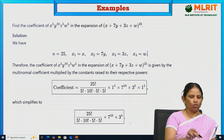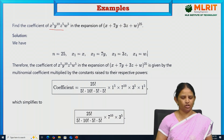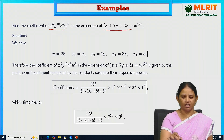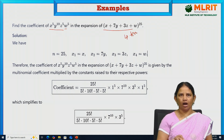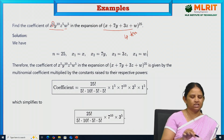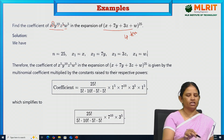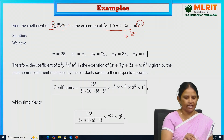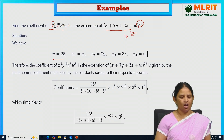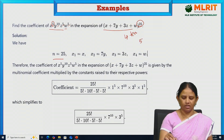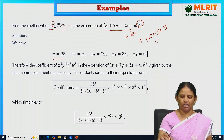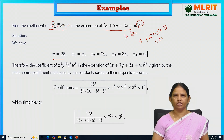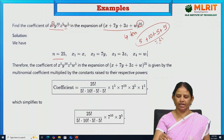Consider the first example: find the coefficient of x⁵ · y¹⁰ · z⁵ · w⁵. There are four terms present in the expansion. The power of x is q1, y power is q2, z power is q3, and w power is q4. So q1 + q2 + q3 + q4 = n. What is n? n equals 25, since 5 + 10 + 5 + 5 = 25.